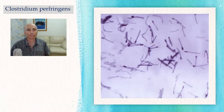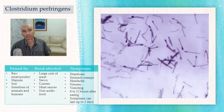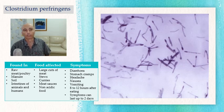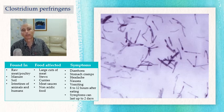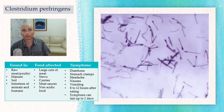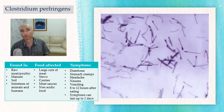Clostridium perfringens is also anaerobic, meaning no oxygen needed. It's found in manure, raw meat, poultry, and the intestines of animals and humans. Foods associated include large cuts of meat, stews, curries, and non-acidic foods. Symptoms can appear within 8 to 12 hours and can last up to two days. Prevention: wash your vegetables, don't use damaged cans, always choose a reputable supplier, and maintain high standards of hygiene.